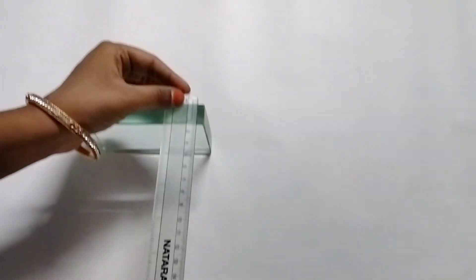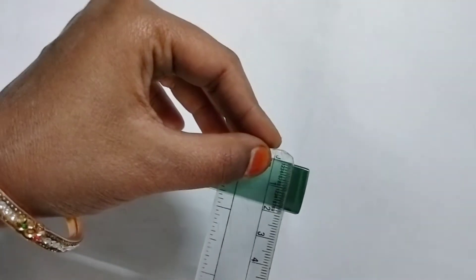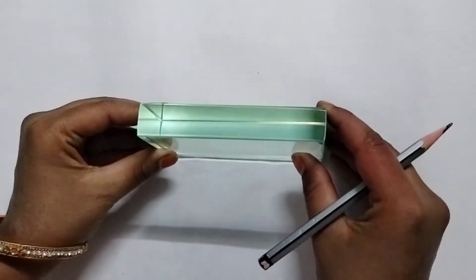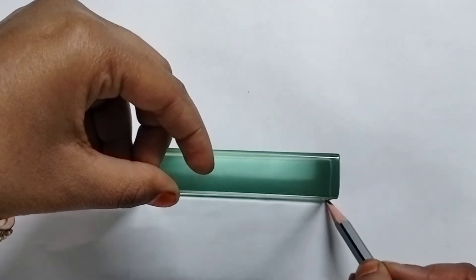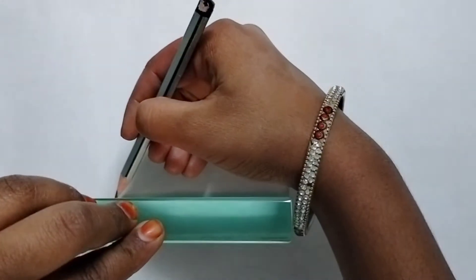Procedure. Take a glass slab and measure the thickness of the slab. Take a white chart and fix it on the wooden plank. Place the slab in the middle of the chart. Draw a line around it.